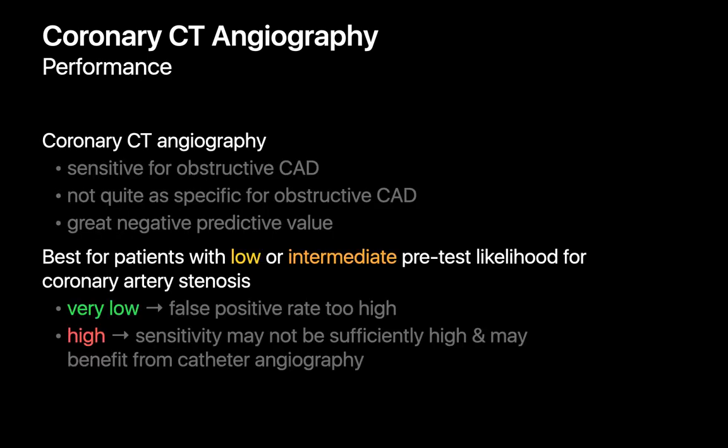Coronary CTA, unlike coronary artery calcium scoring, is a contrast-enhanced CT study that not only permits a much higher resolution look at the coronary arteries but also lets us see how patent the lumen of the vessels may be. Coronary CTA is a sensitive test for obstructive coronary artery disease, though it's not quite as specific — so basically a test with a nice negative predictive value but one that can occasionally result in false positives with regards to the severity of coronary vessel occlusion. Because its negative predictive value is great but its specificity is so-so, coronary CTA can be a good test for patients with a low or intermediate pre-test likelihood for coronary artery stenosis.